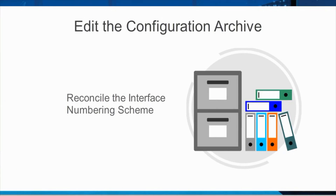In addition, you will need to edit your configuration archive that you have stored on a local system and address issues including reconciling the interface numbering scheme to address any configuration differences between the old appliance and the new appliance. Please refer to the detailed steps in the Migrating to a New ProxySG Appliance Guide.